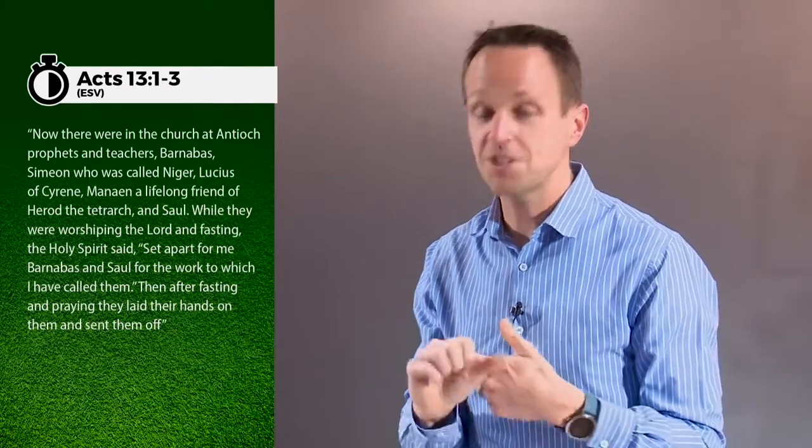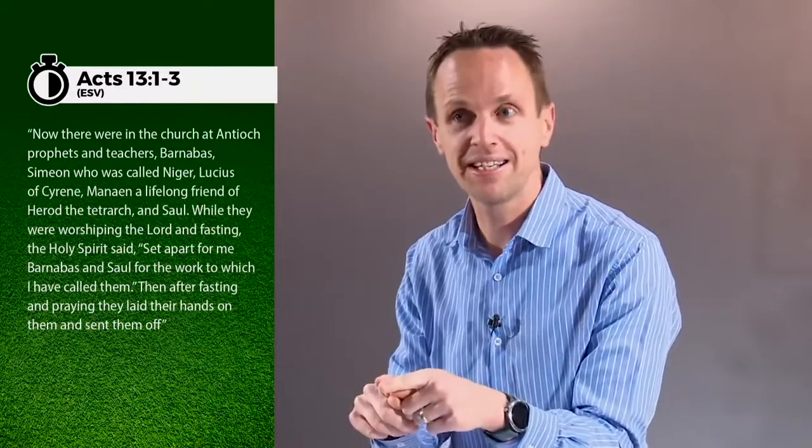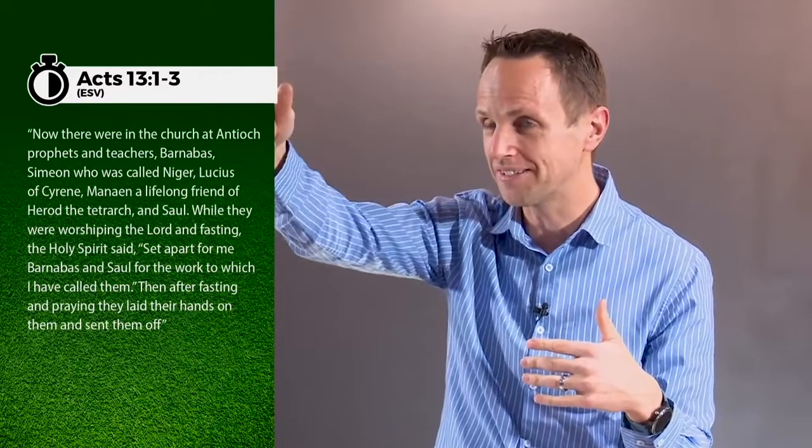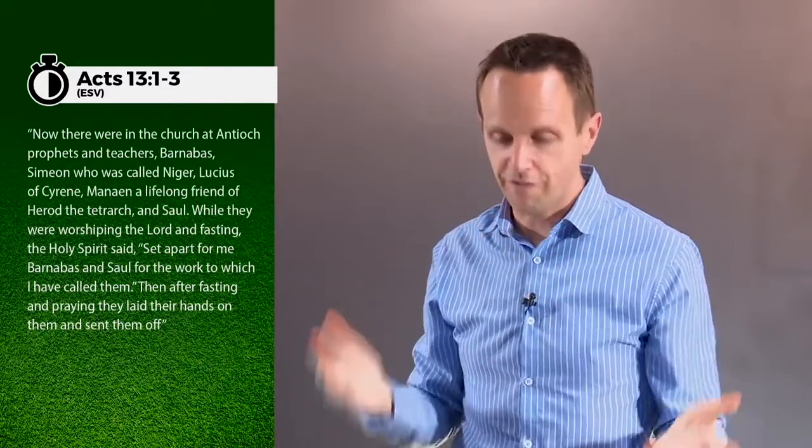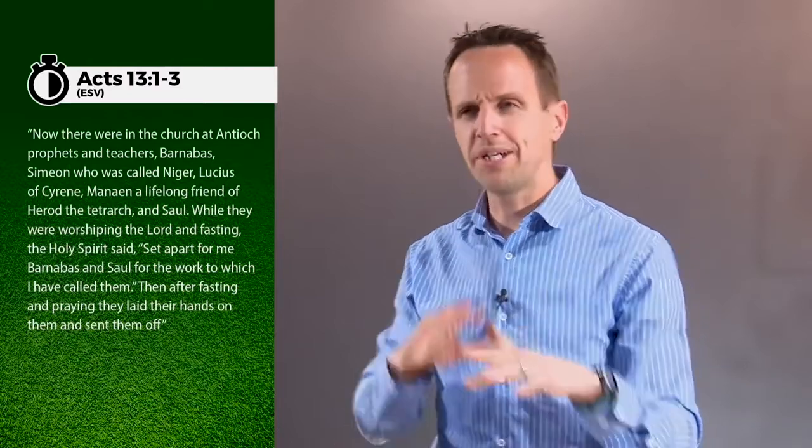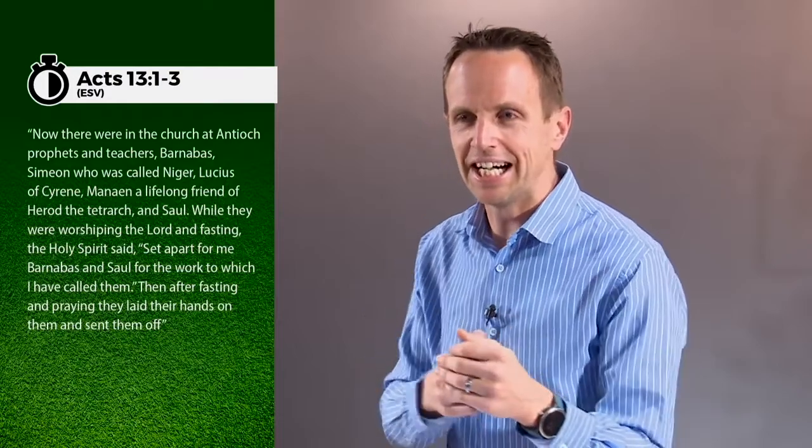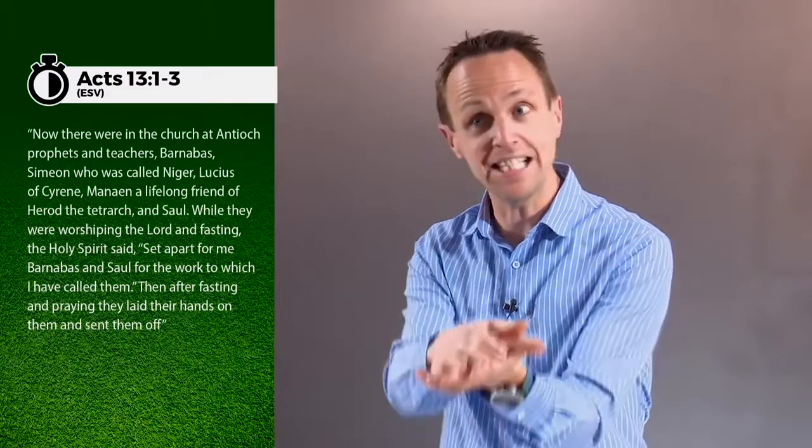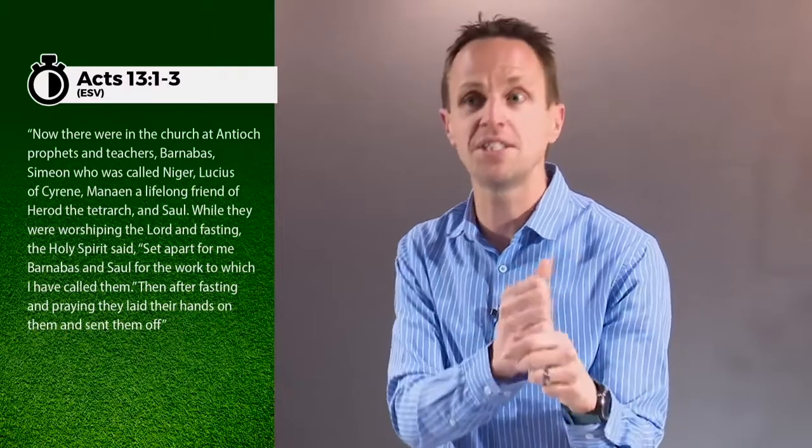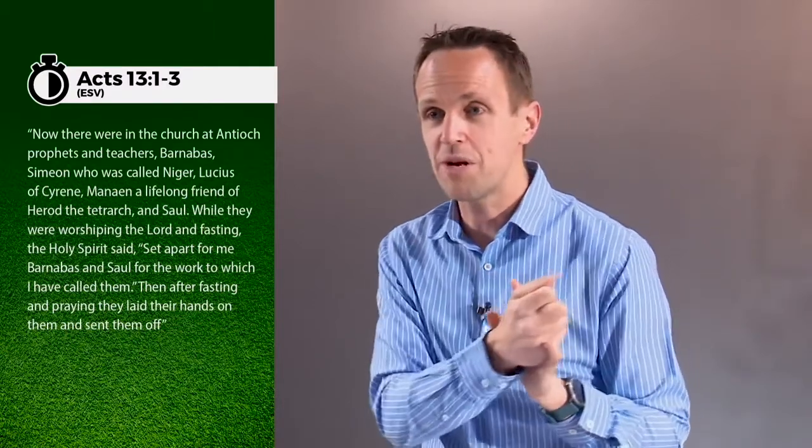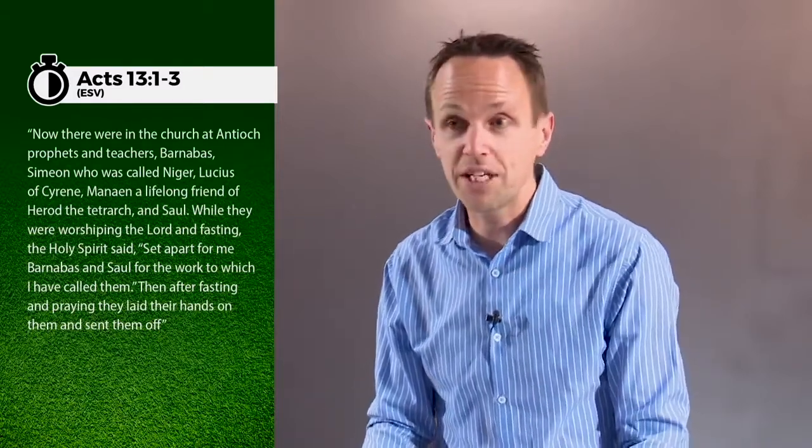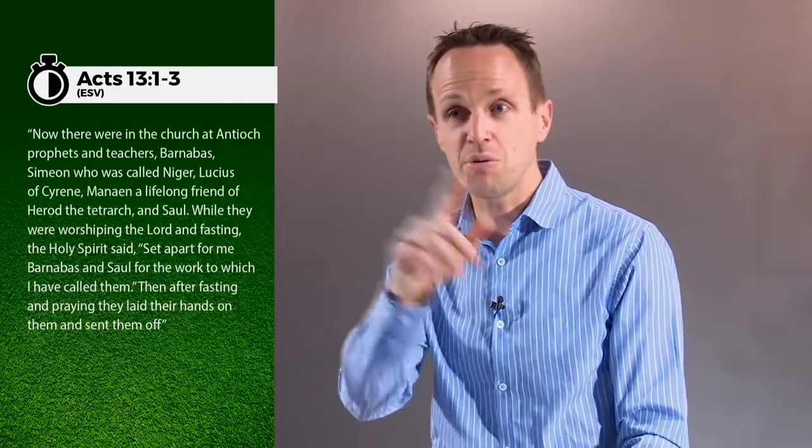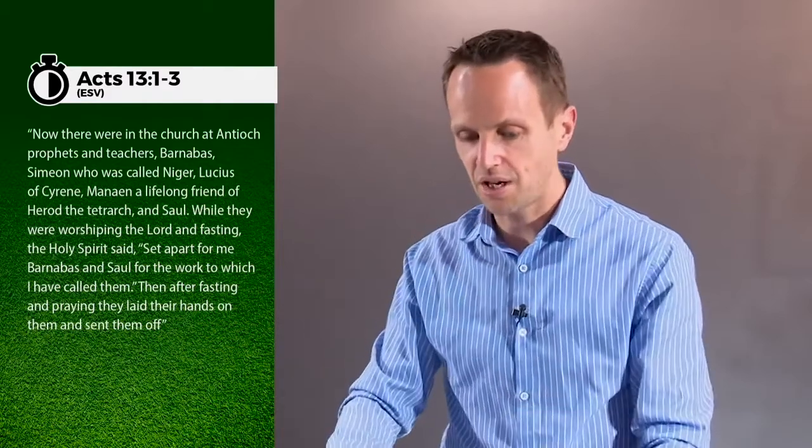And then you've got this guy Manan. It says that he was a lifelong friend of Herod, which really lifelong friend doesn't do it justice. What the phrase actually means there, I won't go into the detail, but he pretty much grew up in the same house as Herod, meaning Manan is this incredibly privileged, rich person. He's in there as well, a Gentile. So you've got Saul, the quintessential Jew, Barnabas, Jew, then you've got these two African representatives, and then you've got this other Gentile, this wealthy, influential Gentile called Manan. That's who we read is kind of this group of the leaders of this church at Antioch. Diversity of ethnic background, diversity of religious background, diversity of socioeconomic background, but one team, one church.